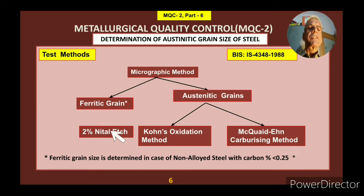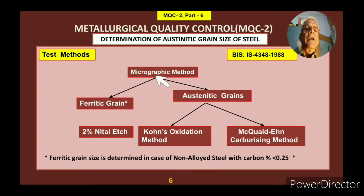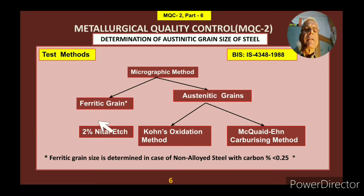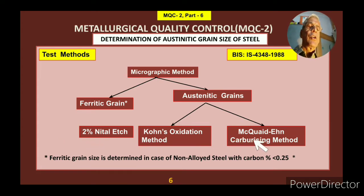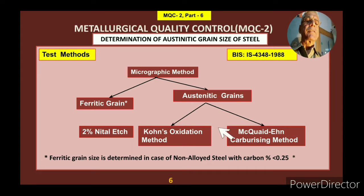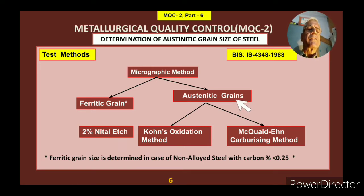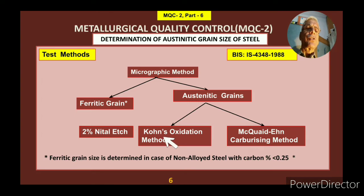For the test method, I will be discussing the micrographic method, covering ferritic grains and austenitic grains. For ferritic grains, you prepare the sample and do etching with nital, and you can see the ferrite grains. But this test is not very popular, as ferritic grain size is determined in case of non-alloyed steel with carbon less than 0.25%. The other method is austenitic grain size determination, which is much more popular. It is done by two methods: Kohn's oxidation method and the McQuaid-Ehn carburizing method.